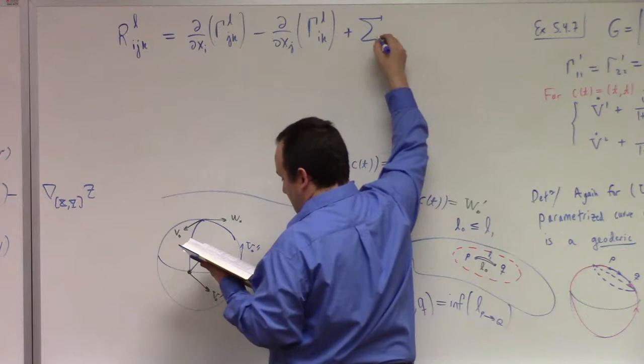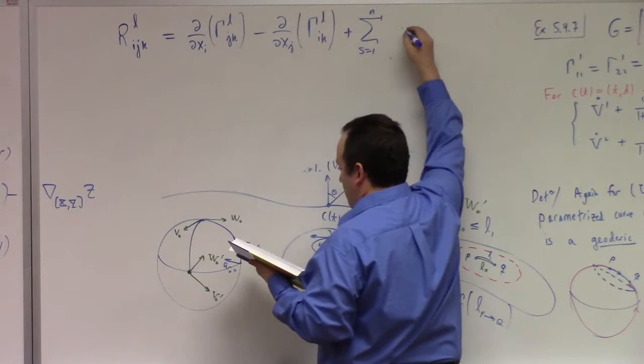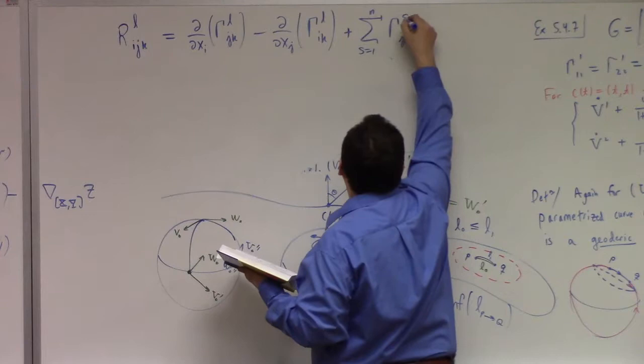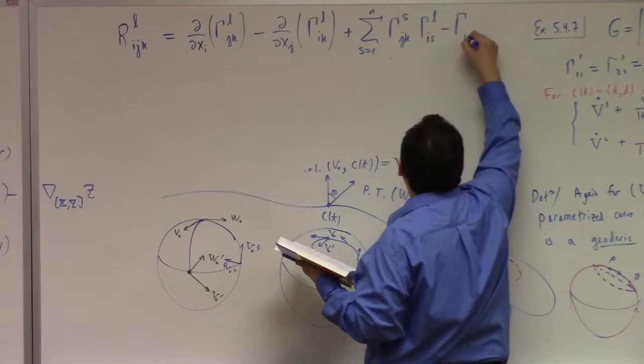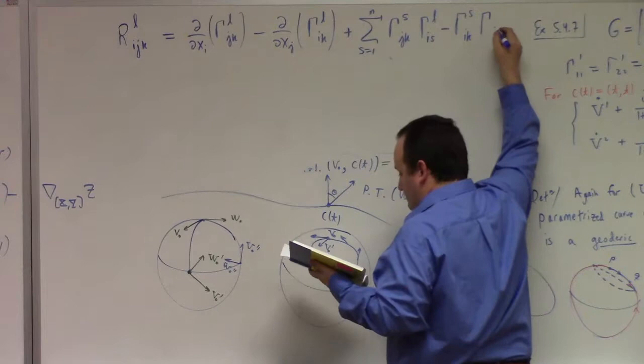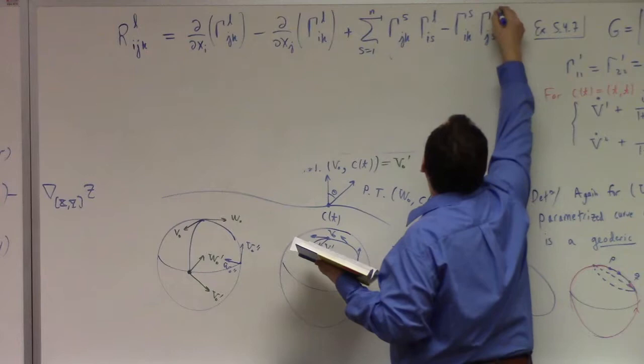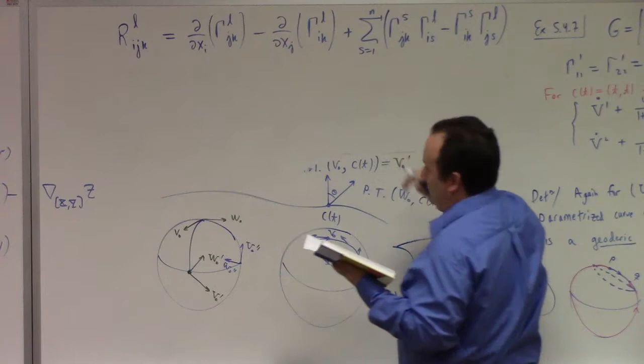Plus the sum over s from 1 to n of gamma jk upper s gamma. It's got to be an upper L. It's got to be there somewhere. Lower ijk lower ijk upper s gamma. I don't know why it took Einstein so long to figure out the math of this. Js upper L parentheses.